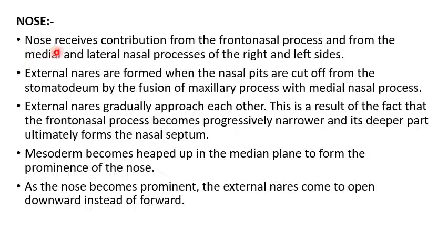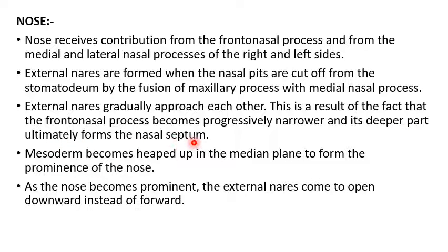Development of the nose: the nose receives contributions from the frontonasal process and from the medial and lateral nasal processes of the right and left sides. External nares are formed when the nasal pits are cut off from the stomodium by the fusion of the maxillary process with the medial nasal process. The external nares gradually approach each other as a result of the frontonasal and medial nasal processes becoming progressively narrower. The deeper part ultimately forms the nasal septum. Mesoderm heaps up in the median plane to form the prominence of the nose, and as the nose becomes prominent, the external nares come to open downwards instead of forwards.